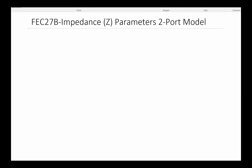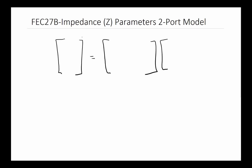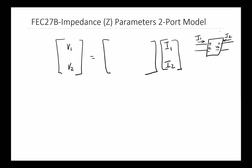In this video we're going to talk about impedance or Z parameters, a two-port network model. The goal is to come up with a matrix that allows us to relate voltage to current — V1 and V2 to currents I1 and I2 in a two-port network. The network has two ports: I1 comes in at port 1 with voltage V1, and I2 at port 2 with voltage V2, using passive sign convention.